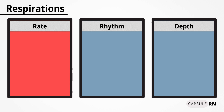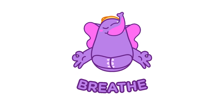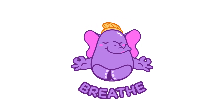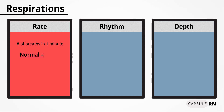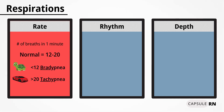First is breathing rate. Breathing rate measures how many breaths the patient takes in one minute. One breath equals one rise and fall of the chest. A normal adult will breathe 12 to 20 times every minute. If the adult is breathing less than 12 breaths every minute, we call that bradypnea. If the adult is breathing more than 20 breaths every minute, we call that tachypnea.